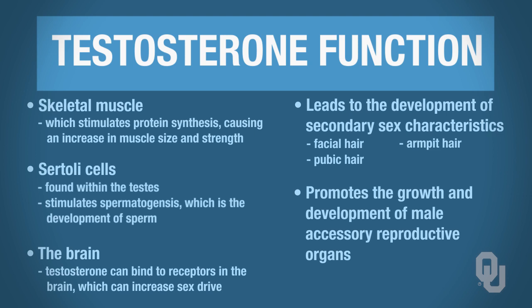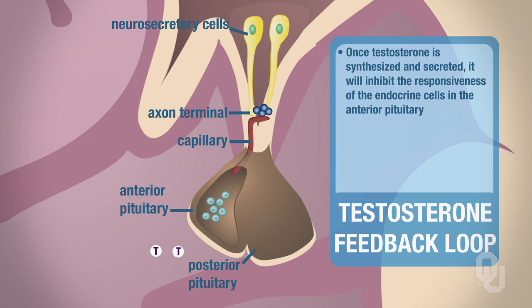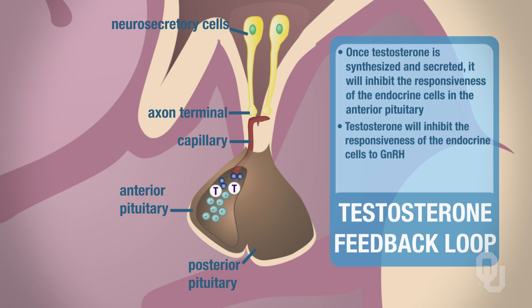Now let's look at how we can turn off testosterone synthesis and secretion. With hormones, once they synthesize and secrete and perform their function, we must turn them off. We turn hormones off using negative feedback systems. Testosterone, once synthesized and secreted, will inhibit the responsiveness of the endocrine cells in the anterior pituitary — specifically, it inhibits their responsiveness to GnRH. If the endocrine cells don't respond to GnRH, then the anterior pituitary will not make luteinizing hormone. At the same time, testosterone will also have an impact on the hypothalamus.